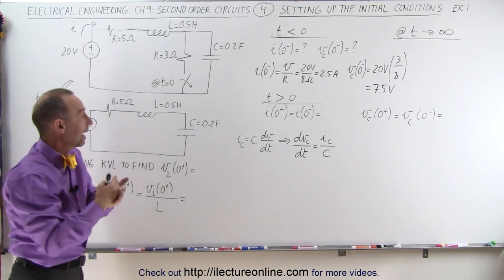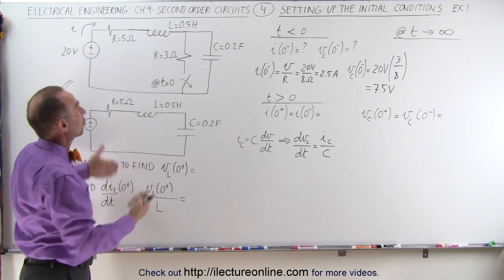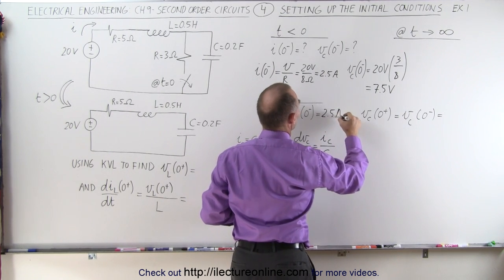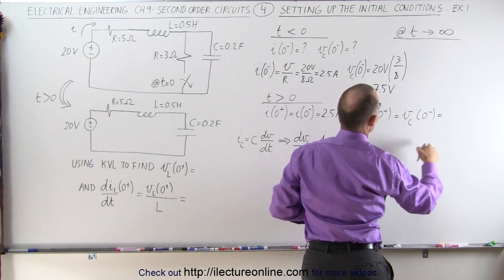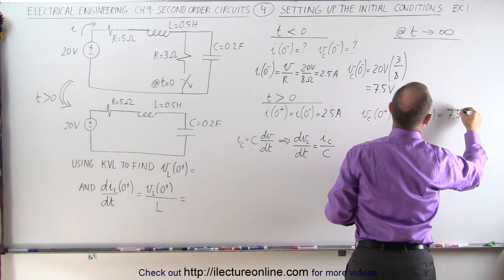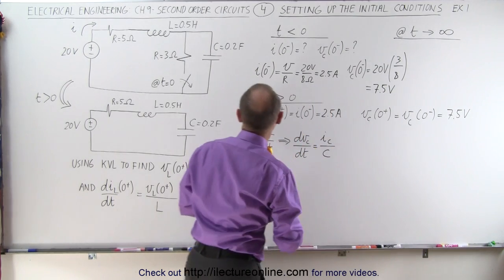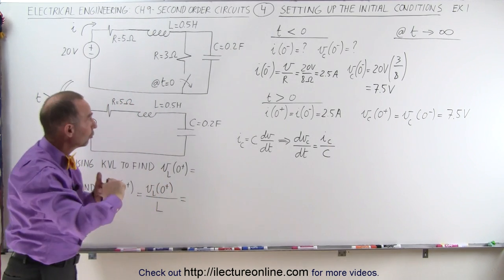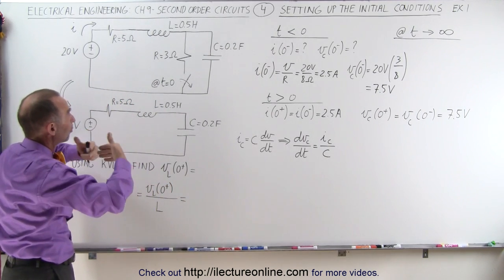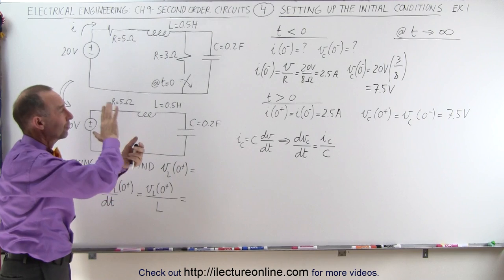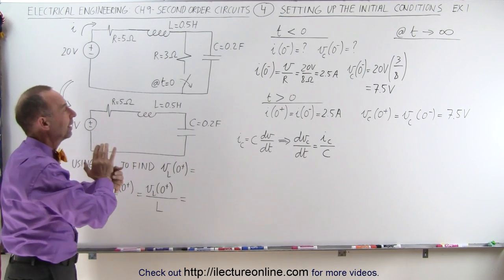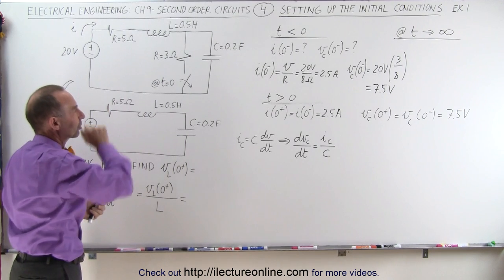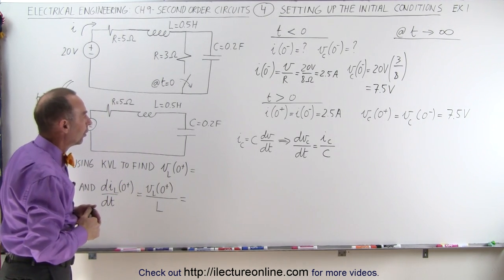Momentarily after the switch opens, nothing has really changed — the current will still be 2.5 amps and the voltage across the capacitor will still be 7.5 volts. The reason is that the inductor opposes a change in current, so as soon as the situation changes, the inductor initially holds the current and it cannot jump instantaneously from one value to another.